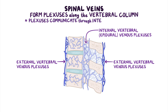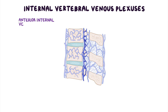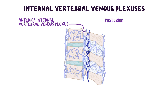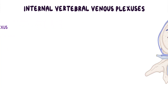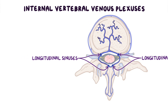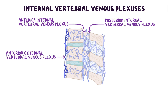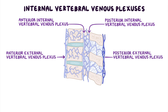These plexuses communicate through the intervertebral foramina. The internal vertebral venous plexuses are further divided into the anterior internal vertebral venous plexus, lying more anteriorly in the vertebral canal, and the posterior internal vertebral venous plexus, lying most posteriorly. Additionally, the internal vertebral plexus may form large longitudinal sinuses. The external vertebral venous plexuses are divided similarly, with the anterior external lying just anterior to the vertebral bodies, and the posterior external lying posterior to the spinous processes.